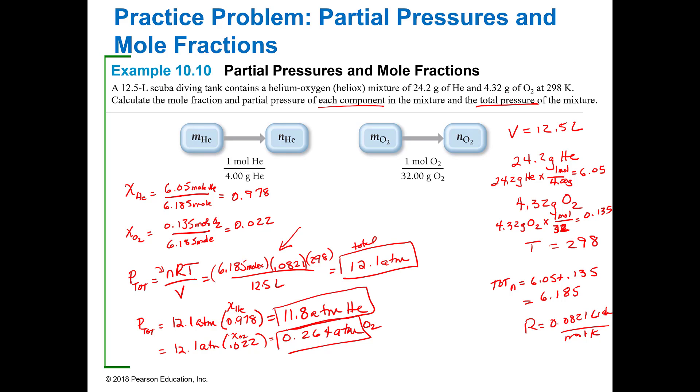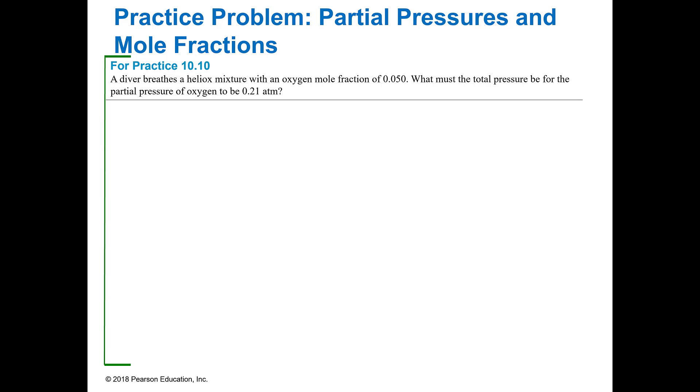So I now know what the partial pressures of the two gases are in addition to the total pressure. Dalton helped me do that because I know that the mole fraction is the sum of the partial moles to the total moles. Partial pressure and moles are proportional. Here is one for you to do with the heliomix.